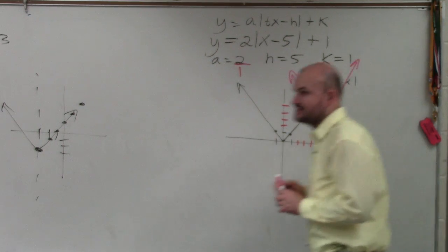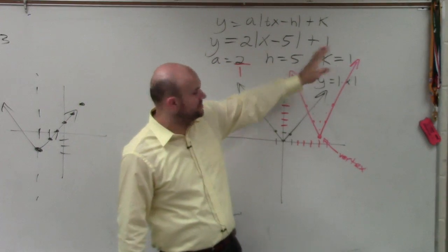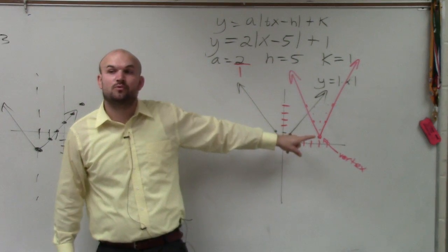So what I want you guys to see from my original graph, what did 2, 5, and 1 do? It shifted my graph 5 units to the right. It shifted my graph 1 unit up.